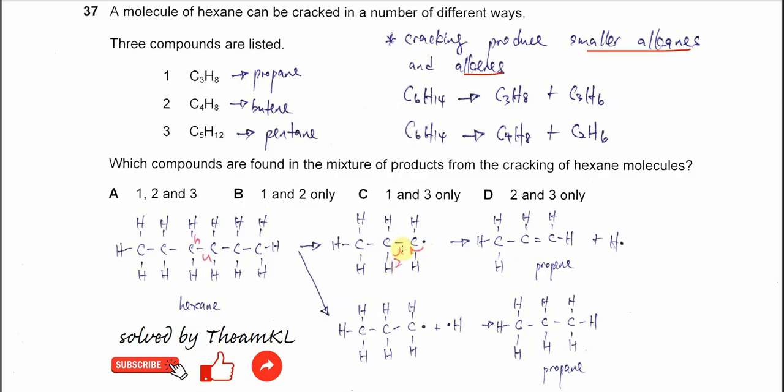One electron will move to this C-C bond and eventually these two electrons will form one bonding. And these hydrogens will release as a radical. So it will form propene.